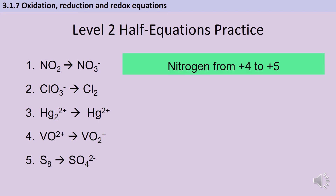In the first question nitrogen is oxidized from plus four to plus five while oxygen keeps an oxidation state of minus two. I don't need to do any balancing because I've got one nitrogen atom on both sides. What I do need to do is add an electron to the right hand side to counteract the change from plus four to plus five. Then looking at the oxygen: the right hand side has one extra oxygen, so the left hand side is going to need one extra water molecule, and to counteract that the right hand side is going to need two hydrogen ions.